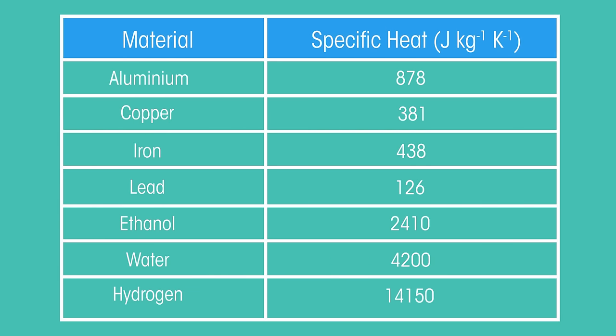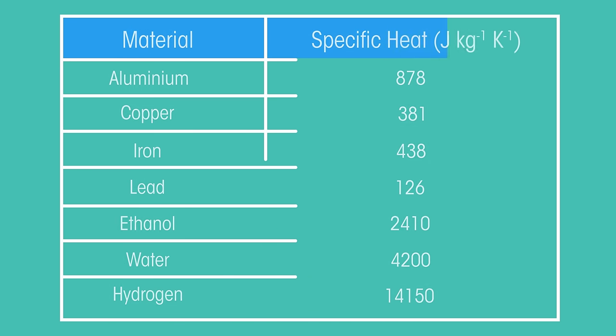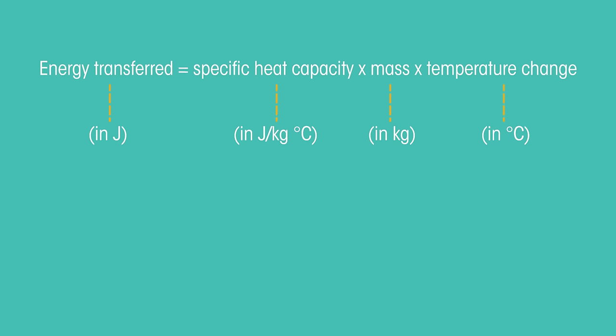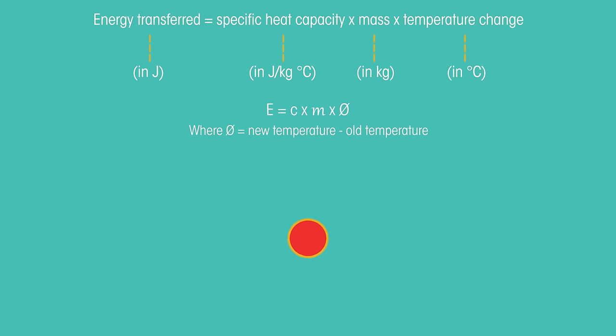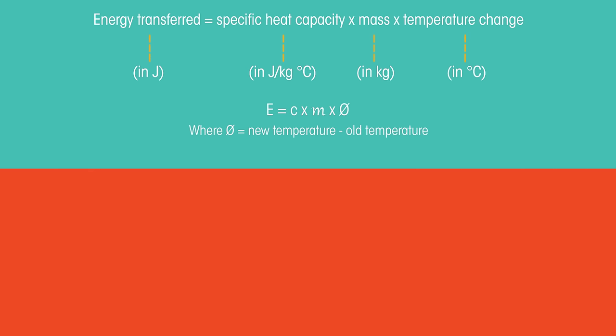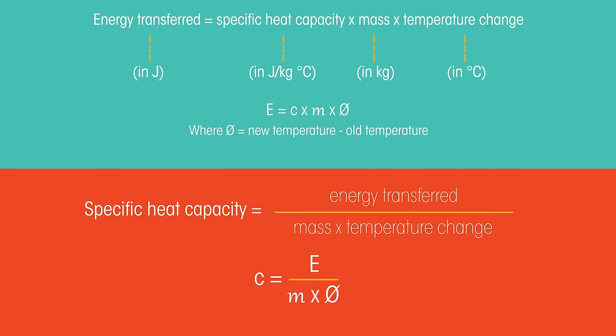But we aren't always given a table like this, so we need to know how to calculate specific heat capacities ourselves. We have this equation which can be written as symbols. The energy transferred is the heat energy absorbed or released. This equation can also be rearranged to work out the temperature change. Subtract the old temperature from the new temperature.